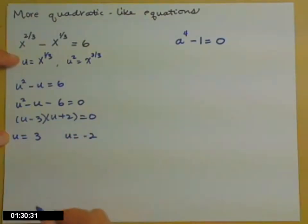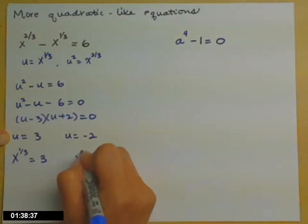Now we have to go back and get our x's. So u is the same thing as x to the one-third. So x to the one-third equals three, or x to the one-third equals negative two.